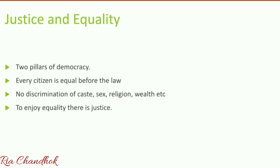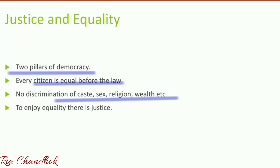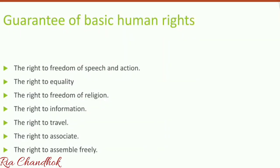Another element of democracy is justice and equality. Justice and equality are the two pillars of democracy. Justice means giving each person what is due to them. Equality is defined by our Constitution as every citizen being equal before the law — there shall be no discrimination on the basis of caste, sex, religion, wealth, etc. Justice means everyone should get what they deserve.